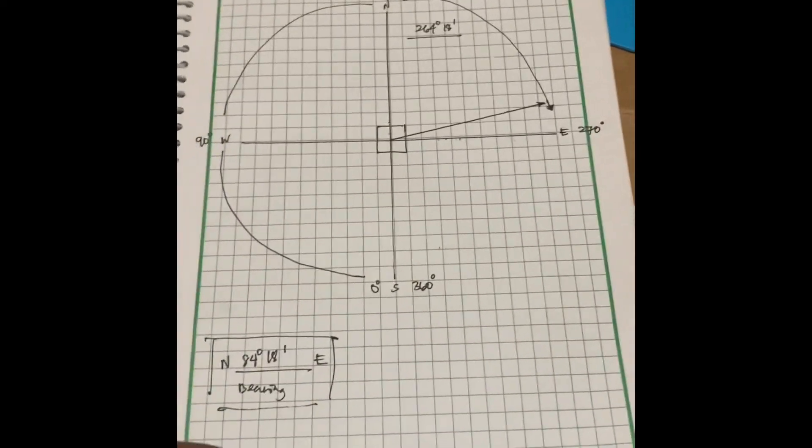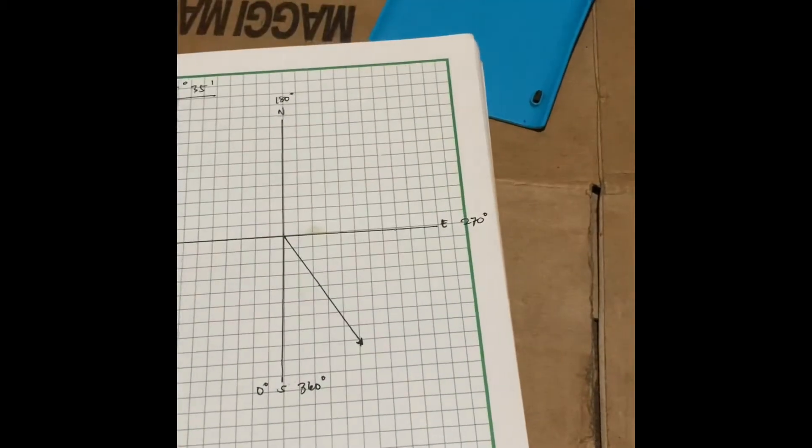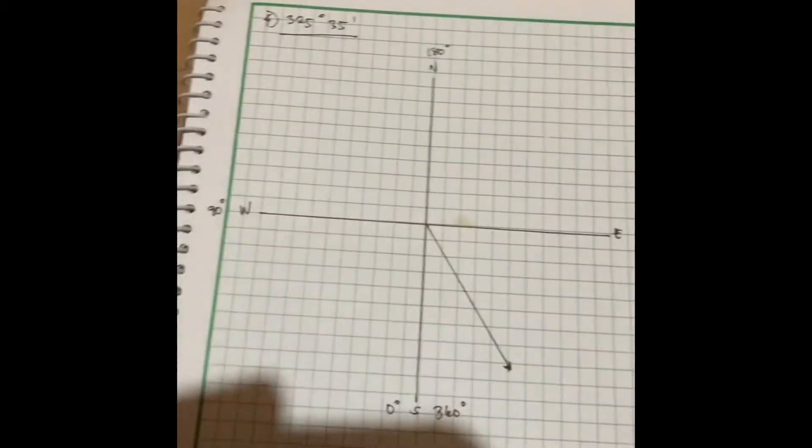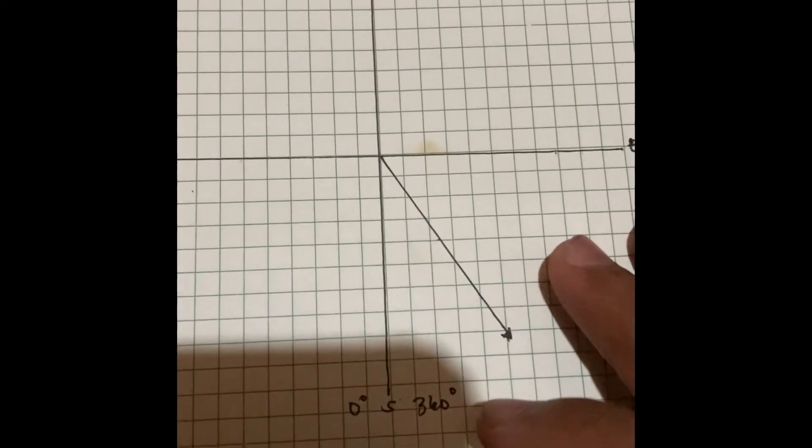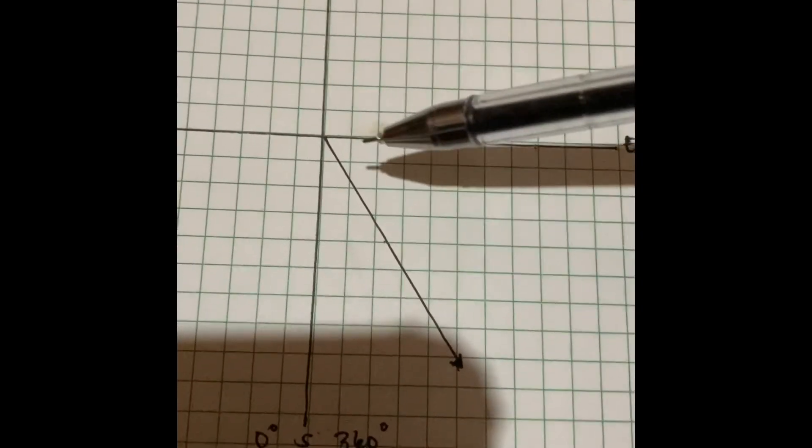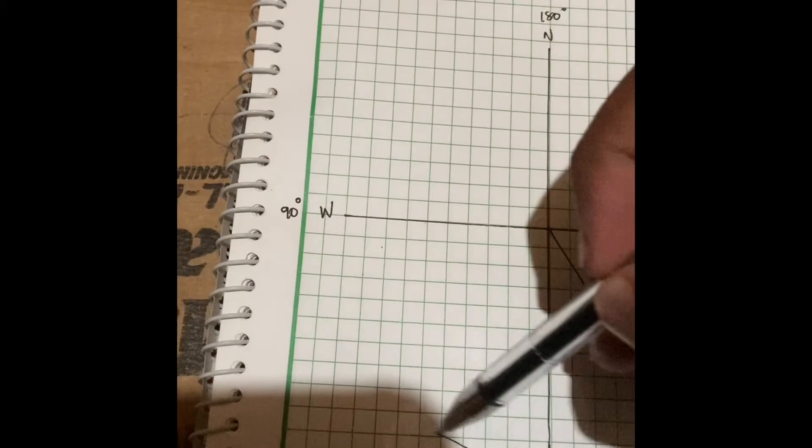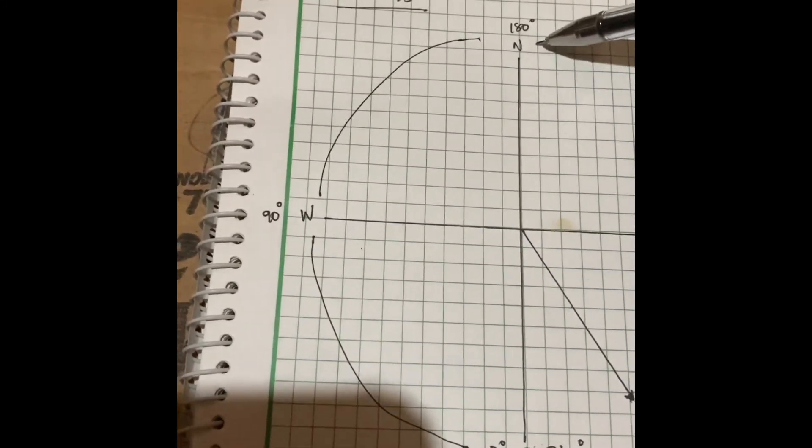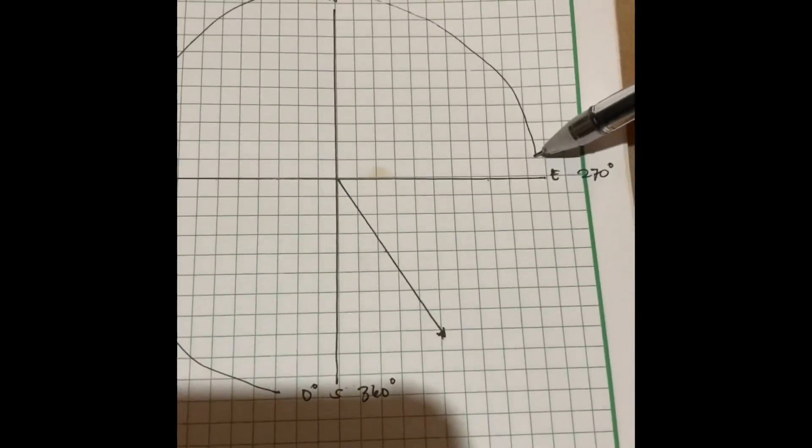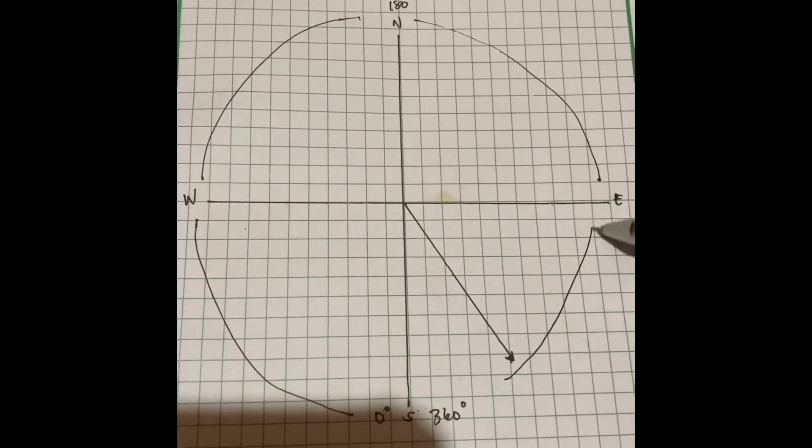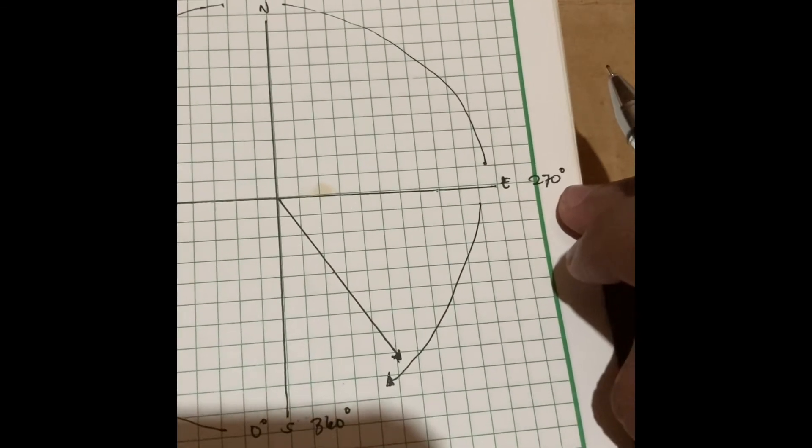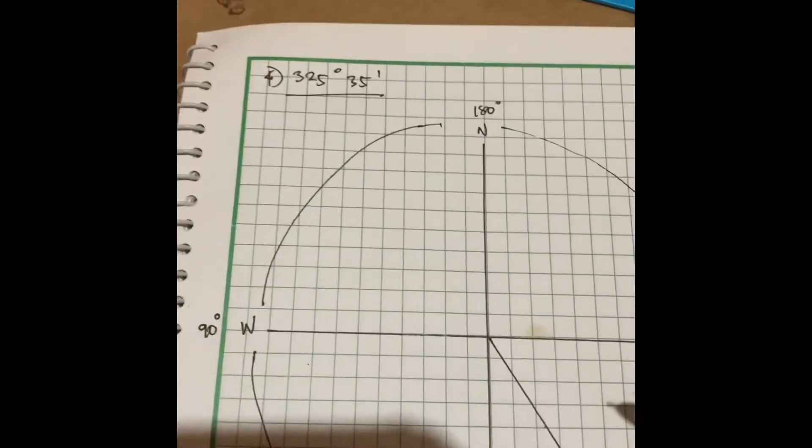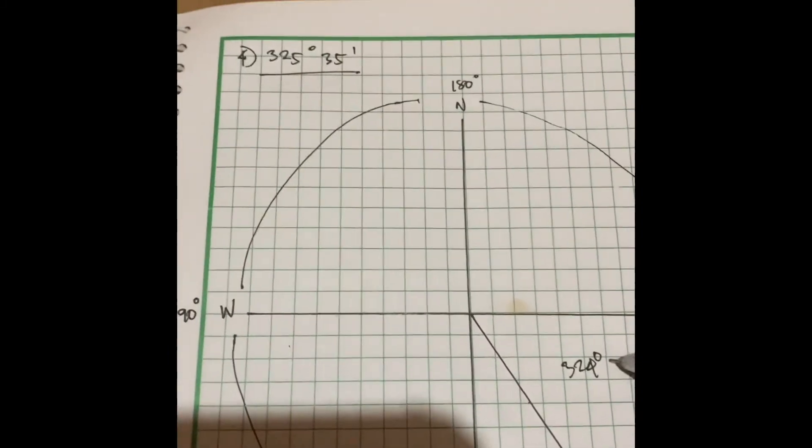For number 4, the given azimuth is 325 degrees and 35 minutes. Starting from zero degrees, we go 90 plus 90 degrees equals 180, plus 90 equals 270 degrees downward. The azimuth is 325 degrees and 35 minutes.